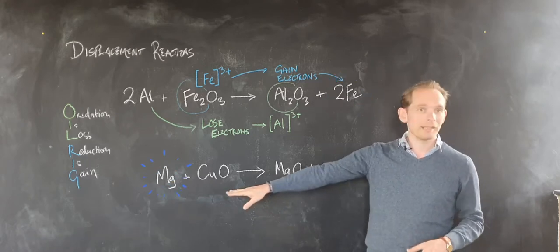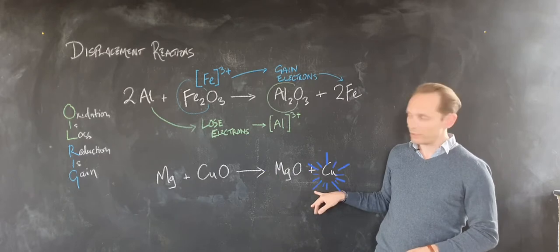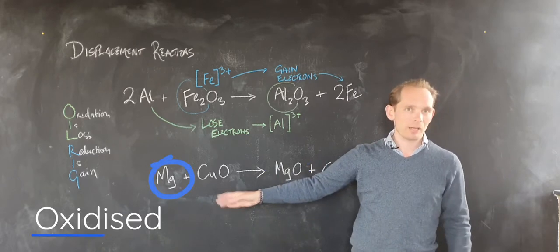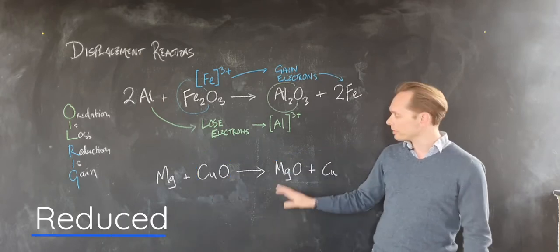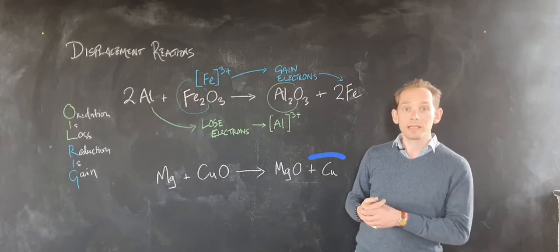Likewise magnesium and copper oxide turning into magnesium oxide and copper, the magnesium is being oxidized, it's losing electrons. The copper oxide is being reduced to become copper because the copper is gaining electrons.